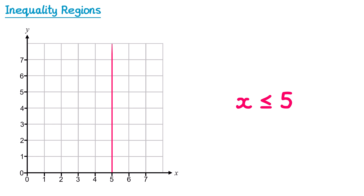What we do is draw that boundary line and then shade the region we're interested in — all points to the left of the line and on the line itself. You'll usually be asked to label or identify this region, so we put an R to identify it. Notice the line we drew has the equation x equals 5. So when drawing the inequality x ≤ 5, we need to draw the line x = 5 to help us. This will always happen with these inequalities.